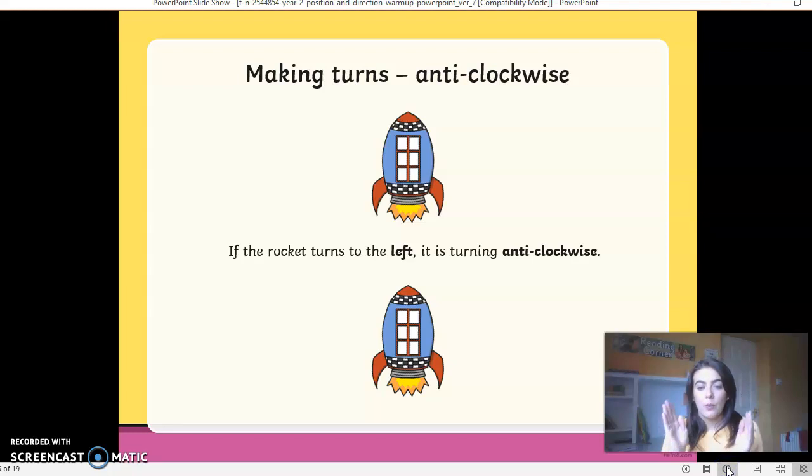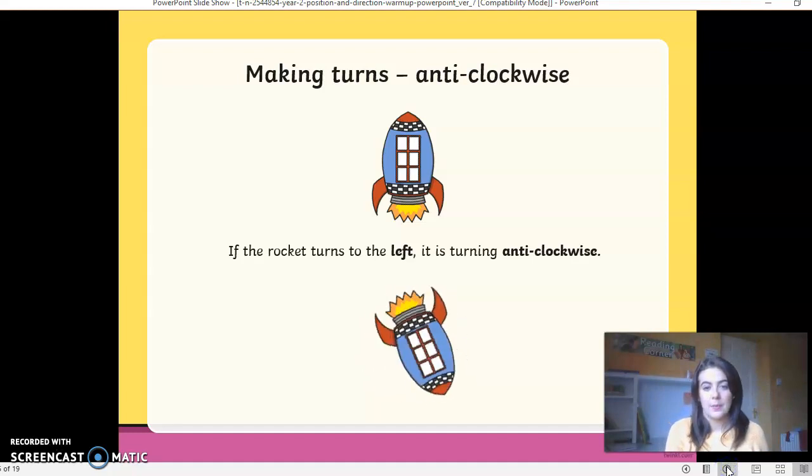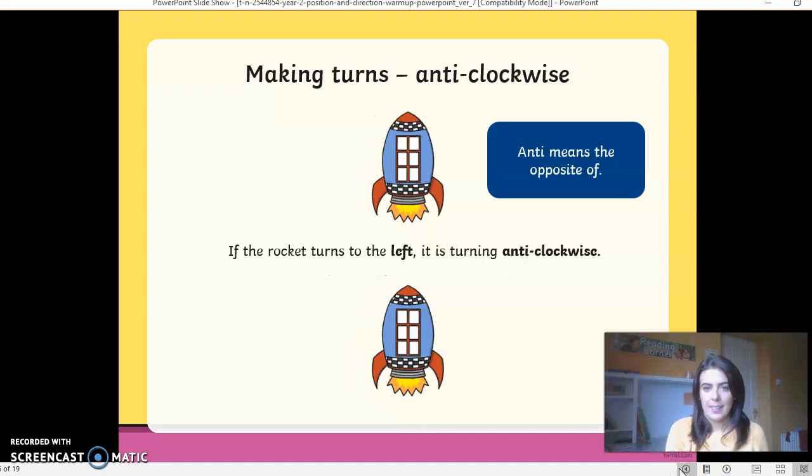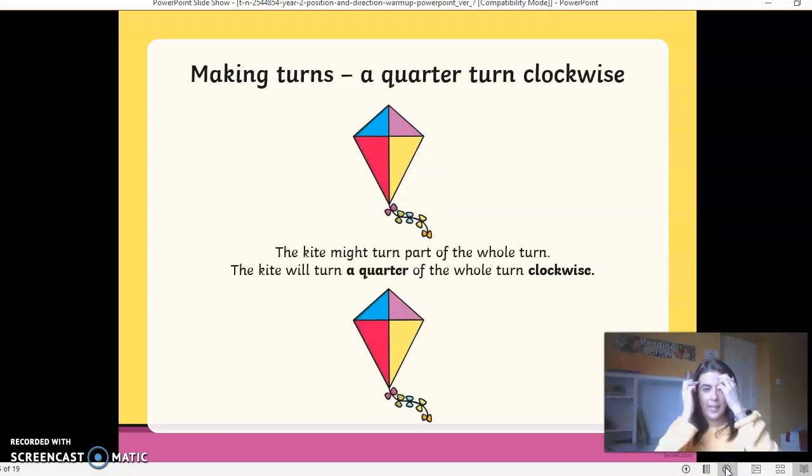So now if we make turns anticlockwise, let's have a look and see. So you're going from the opposite way. If the rocket turns to the left, it is turning anticlockwise. Oh, sorry. Let's go back a little bit. So anti means the opposite. So anti is the opposite of clockwise. So we have clockwise and then anticlockwise. So it's going the opposite way.